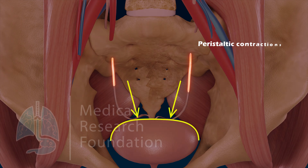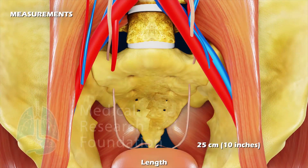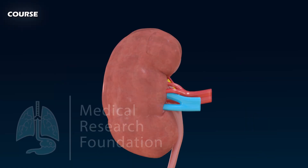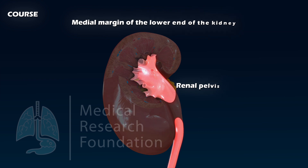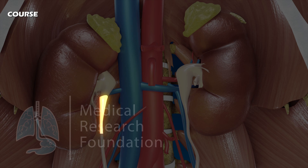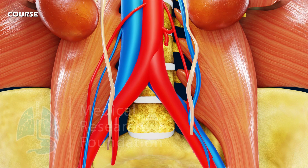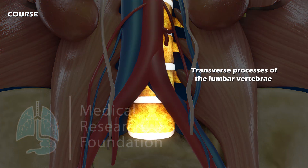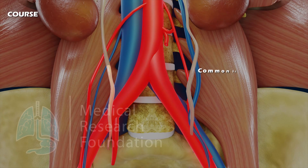Measurements: length 25 centimeters or 10 inches, diameter 3 millimeters. The ureter begins as a downward continuation of the funnel-shaped renal pelvis at the medial margin of the lower end of the kidney, then passes downward and slightly medially on the psoas major, which separates it from the transverse processes of the lumbar vertebrae.